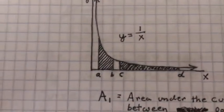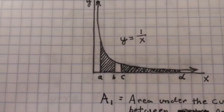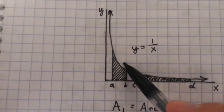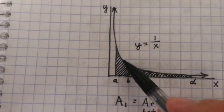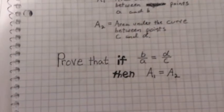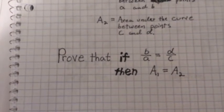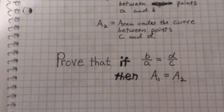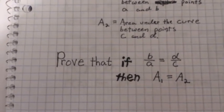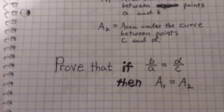That is, your challenge is to prove that if this area is denoted by a sub 1 and this area is denoted by a sub 2, then prove that if b over a equals d over c, then a sub 1 equals a sub 2. Ready? Go!